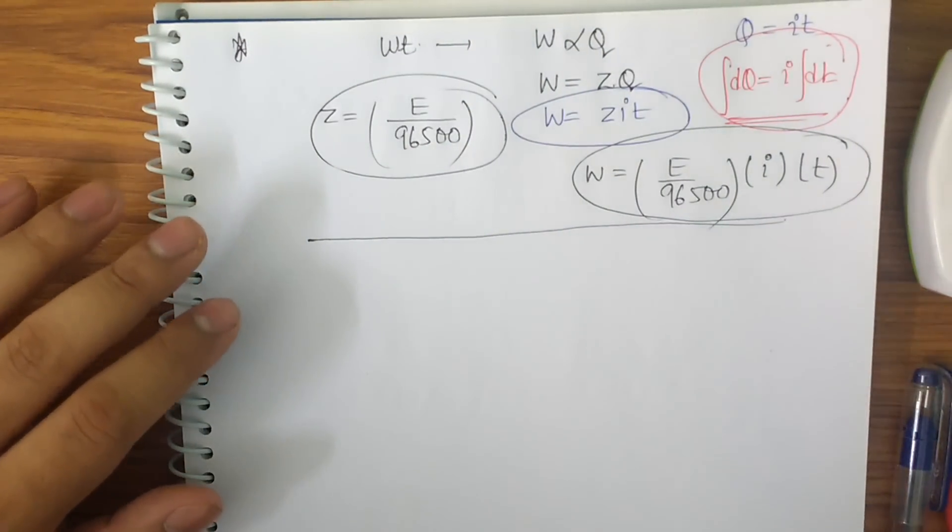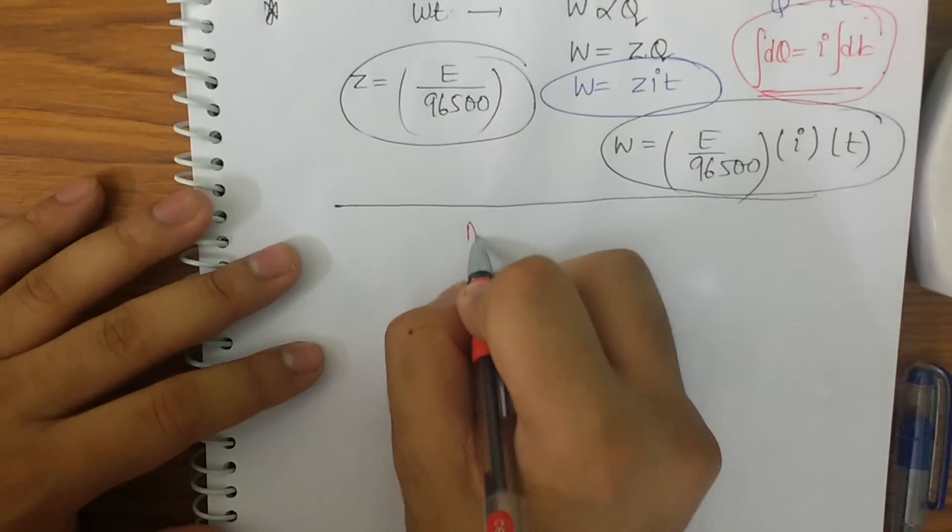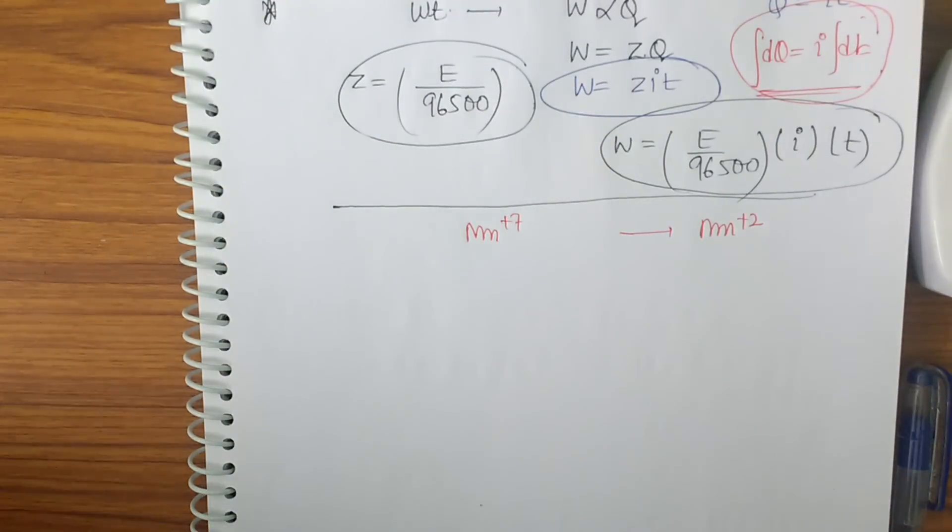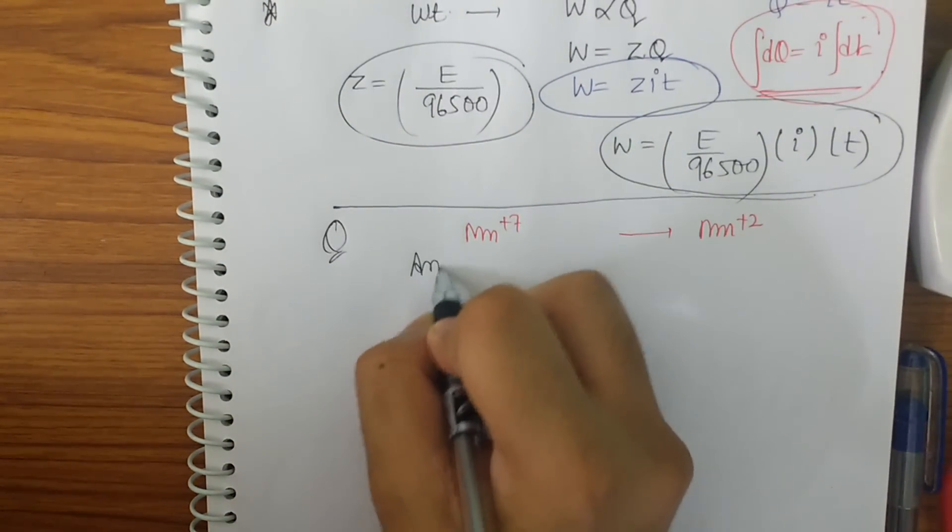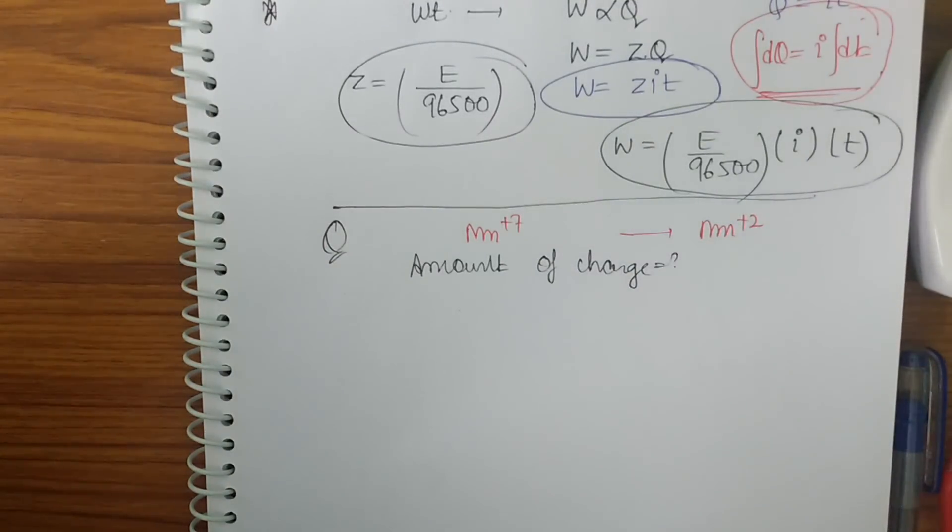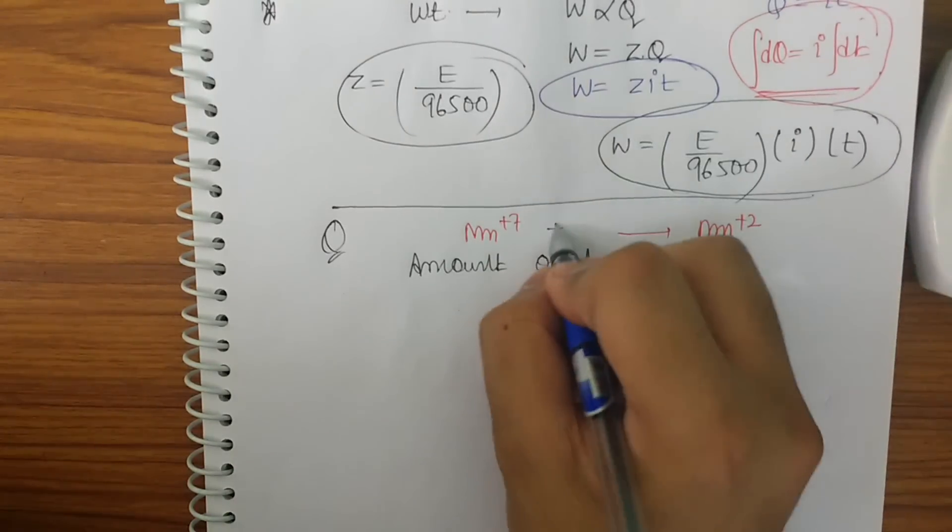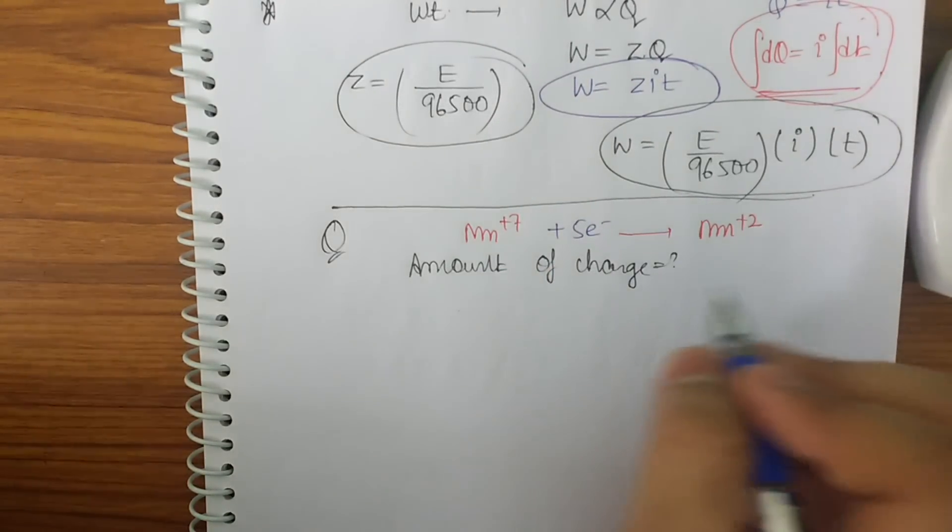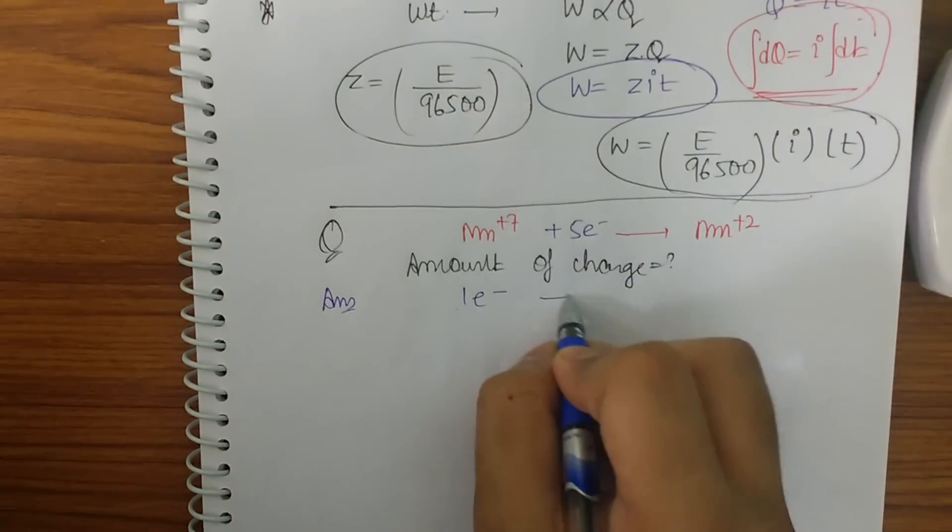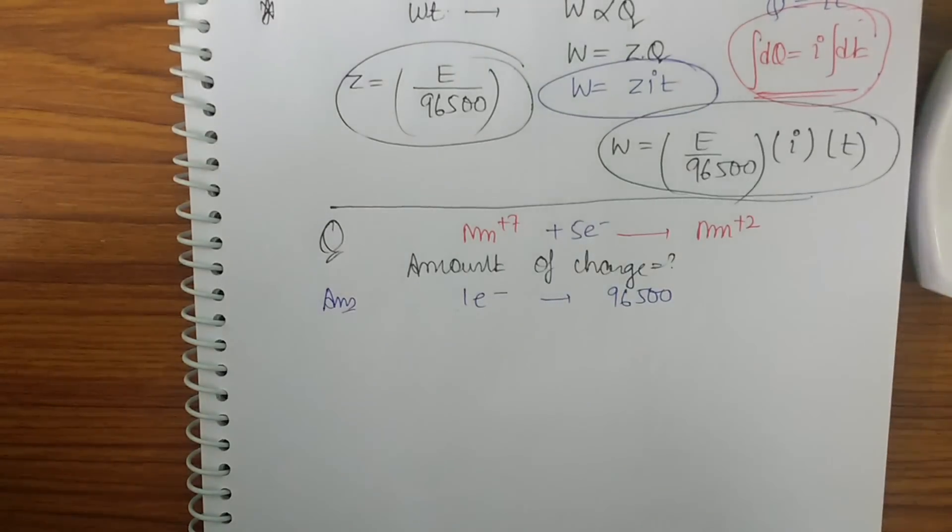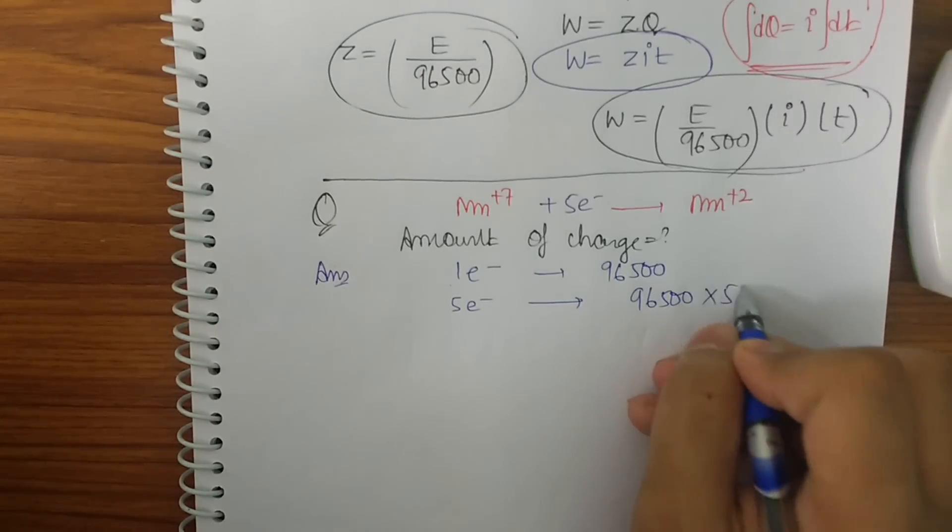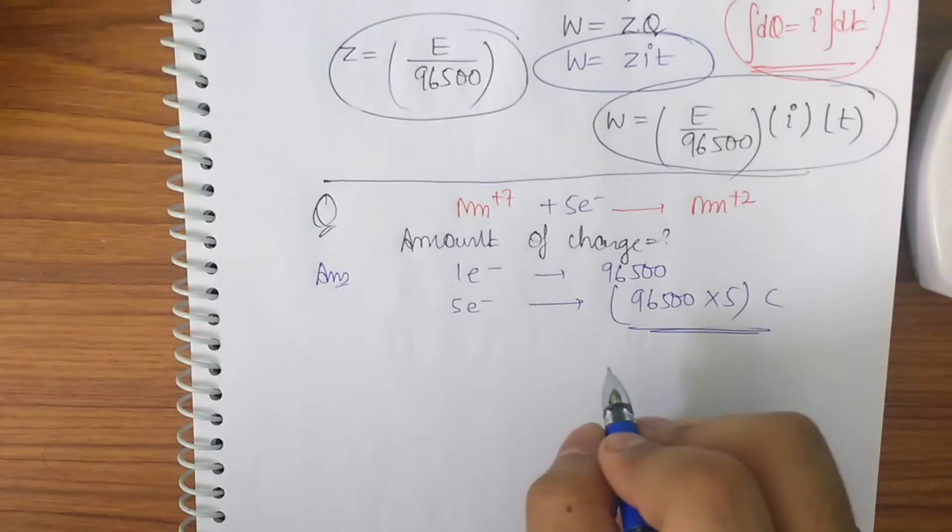Now let me take a simple example to prove it that how to do it. For example I say that Mn plus 7 goes into Mn plus 2. I ask a question that what is amount of charge that is passed. Now how to solve this type of question. See how many electrons will be used for getting this equation. 5 electrons will be used. Now how much amount of charge is passed. See for 1 electron I get 96500 coulomb of charge. Now for 5 electrons I will be getting 96500 into 5 coulomb amount of charge. So this is one of the basic questions.